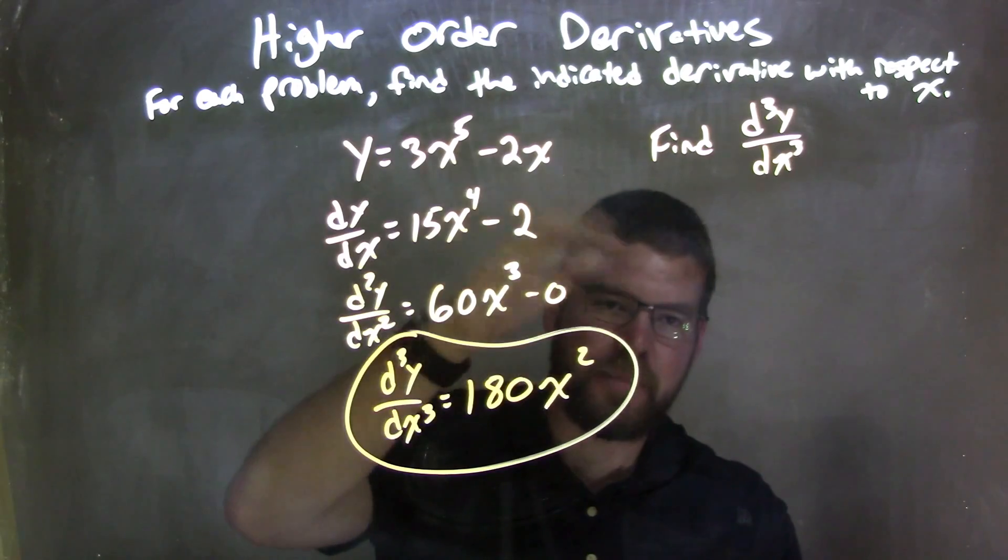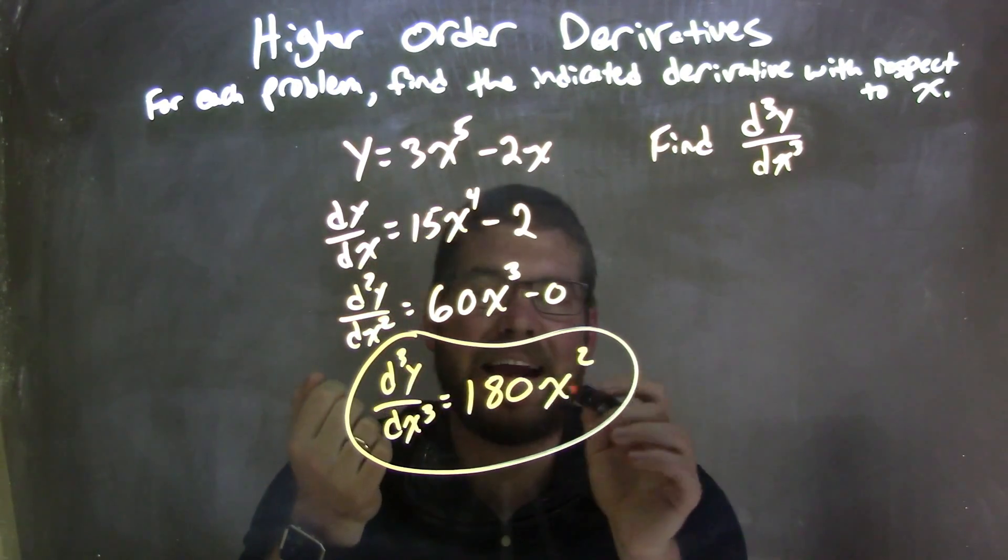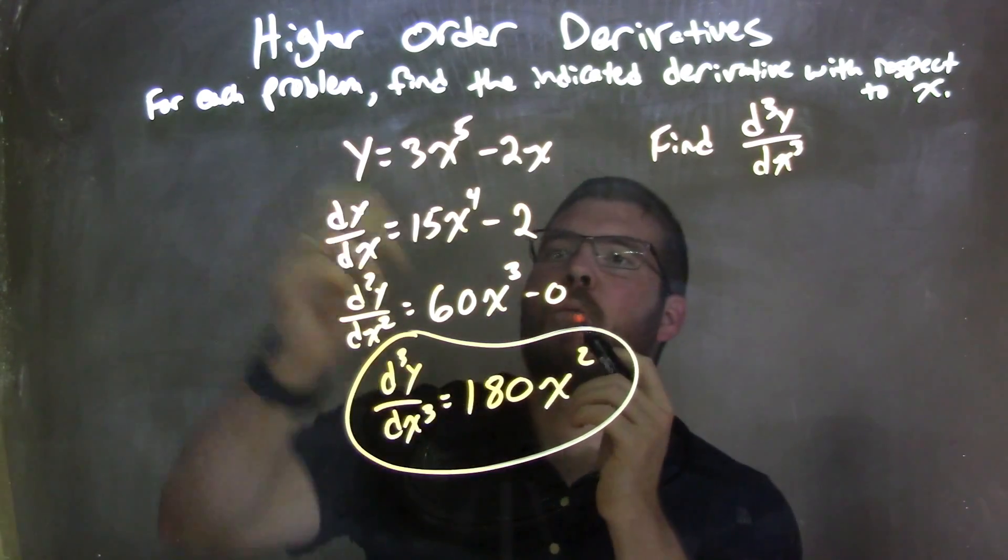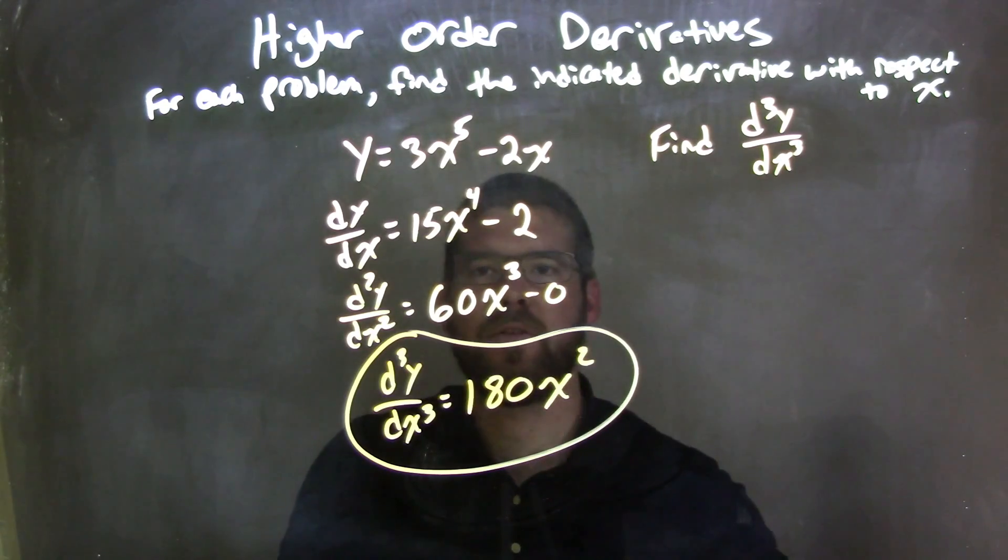The 0 is basically gone. Don't worry about it. And so our third derivative here is equal to 180x squared. So let's recap. We're given y equals 3x to the fifth power minus 2x. And we need to find the third derivative.